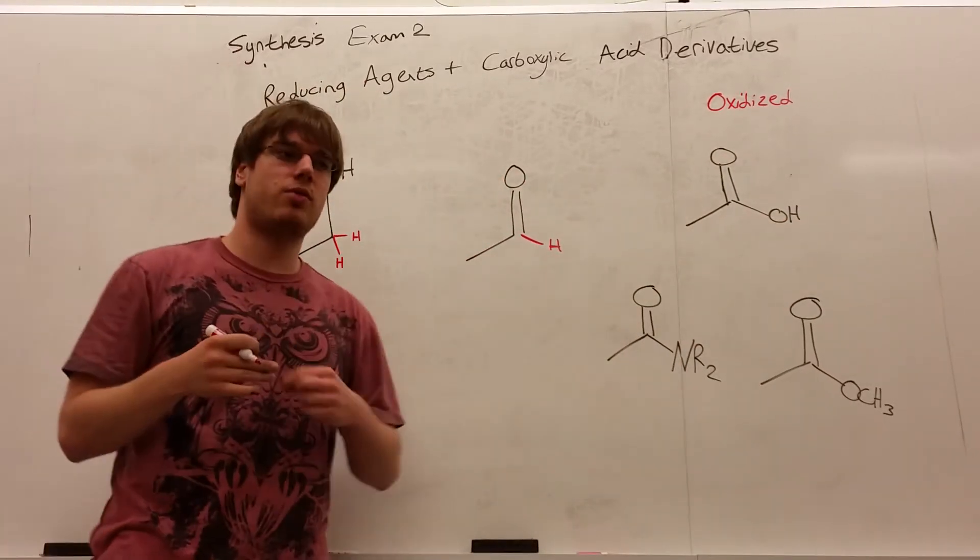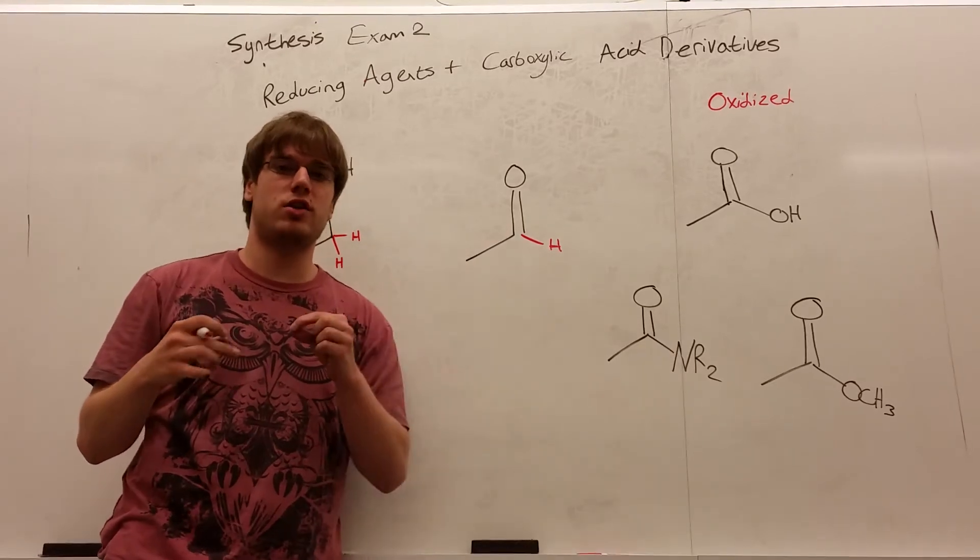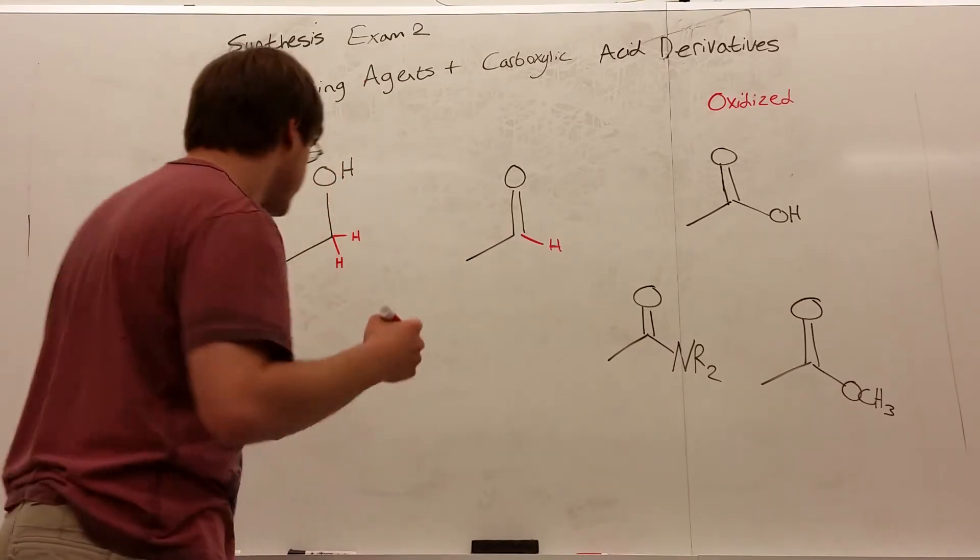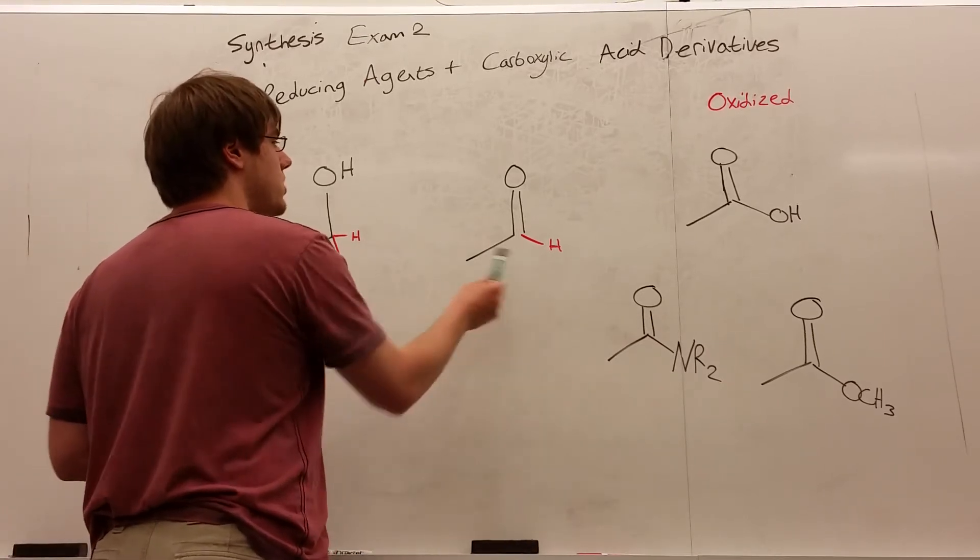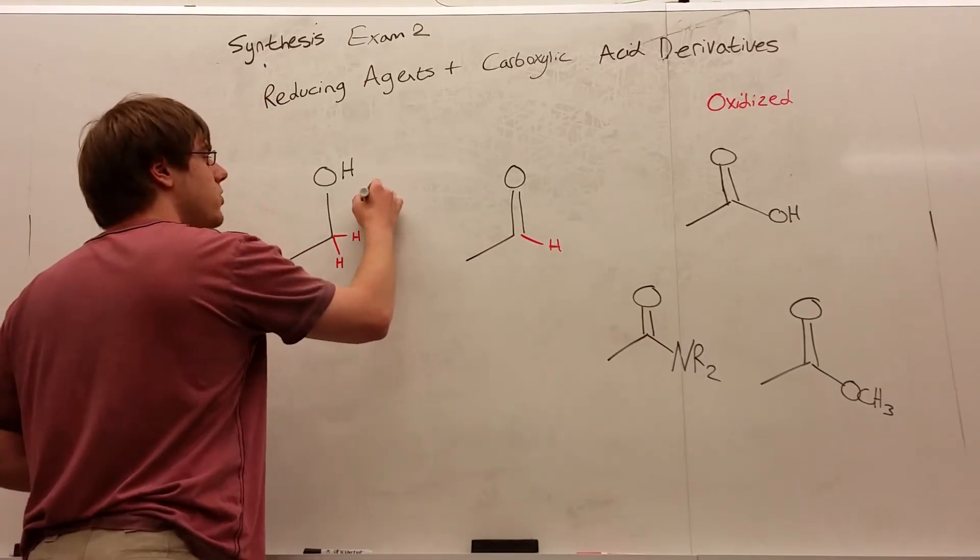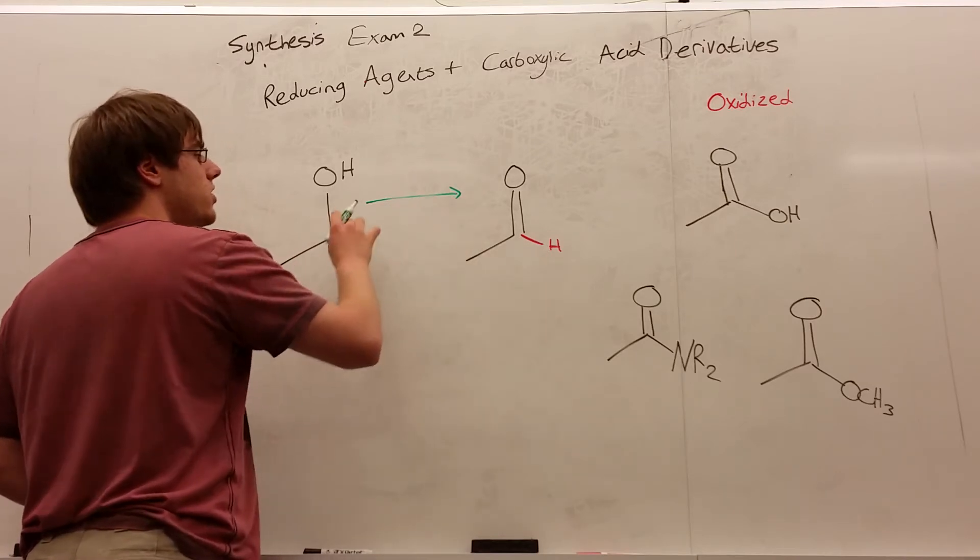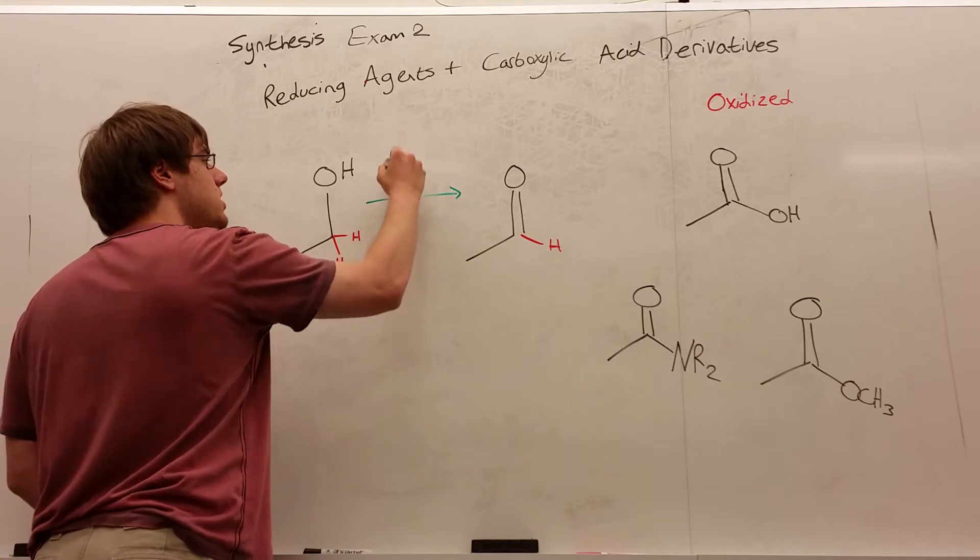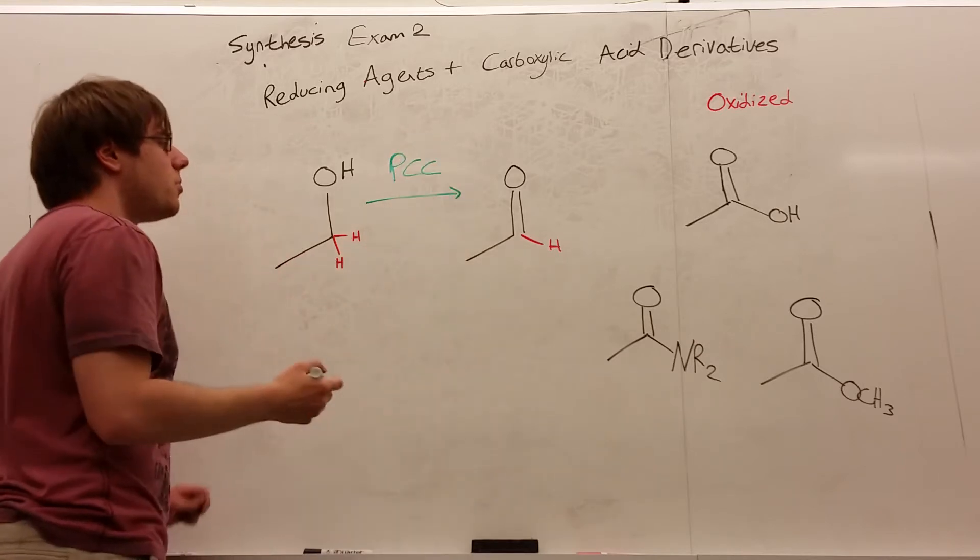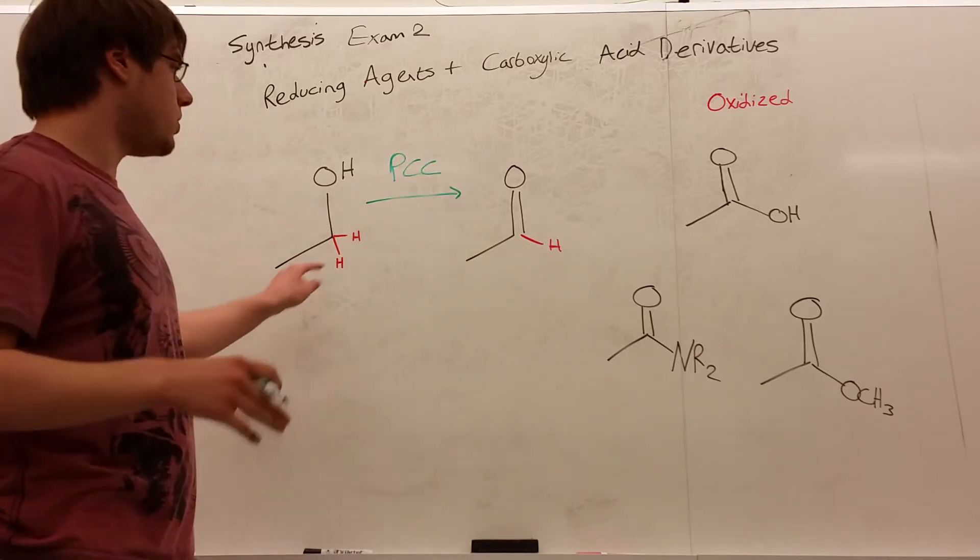So if you can oxidize something, you will remove a hydrogen and replace it with an oxygen bond. Now, how do we go about doing this? What steps do we have that can take us from OH to double bond O? If you watched my basics video, you remember that to oxidize an OH to a C double bond O, you use PCC.